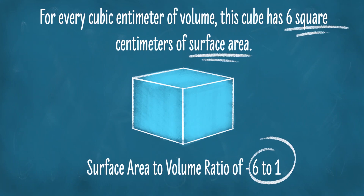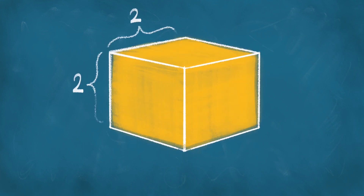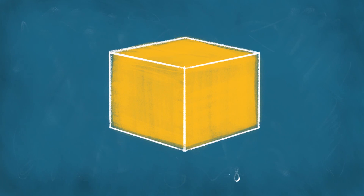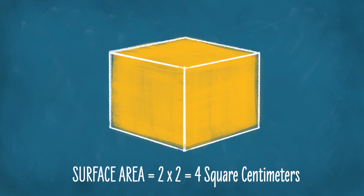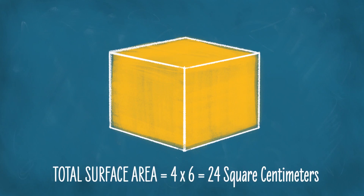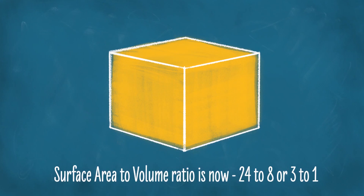For every cubic centimeter of volume, this cube has six square centimeters of surface area — a surface area to volume ratio of 6 to 1. But what happens if I double the length of each side? This cube is two centimeters by two centimeters by two centimeters. Its volume is two cubed — eight cubic centimeters. Each side's area is four square centimeters, and with six sides, the total surface area is 24 square centimeters. The ratio is now 24 to 8, or 3 to 1.